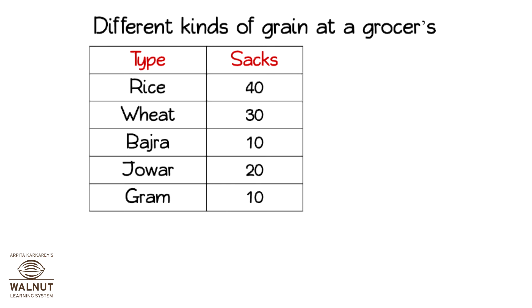Let us make a pictograph of the different grains in a grocer's shop. We have to make a pictograph of this data. We can choose a good symbol like a sack to show the number of sacks. So let's start — how many sacks should one sack picture stand for? Look at the numbers of sacks we have: 40, 30, 10, 20, and 10. Looking at the numbers, I would say one sack picture stands for 10 sacks.